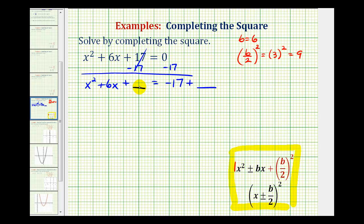So we'll have to add 9 here to make this a perfect square trinomial. And of course, if we add 9 to the left side of the equation to maintain equality, we have to add 9 to the right side as well.